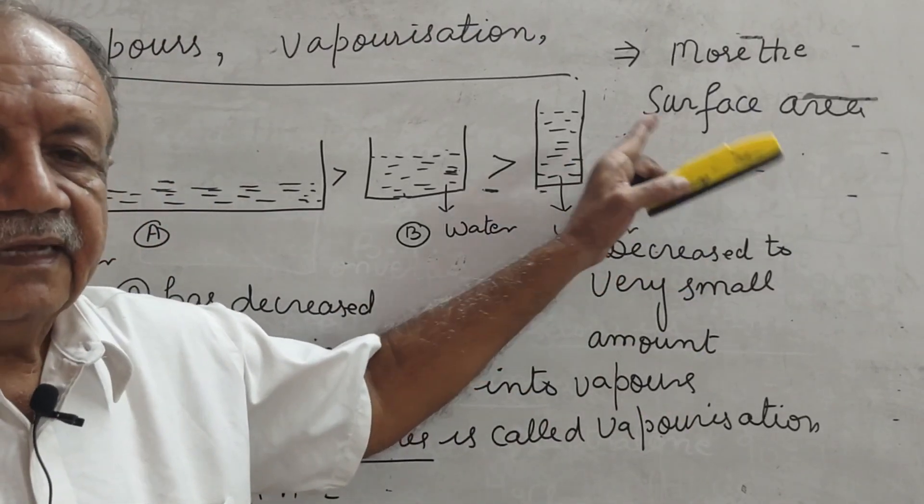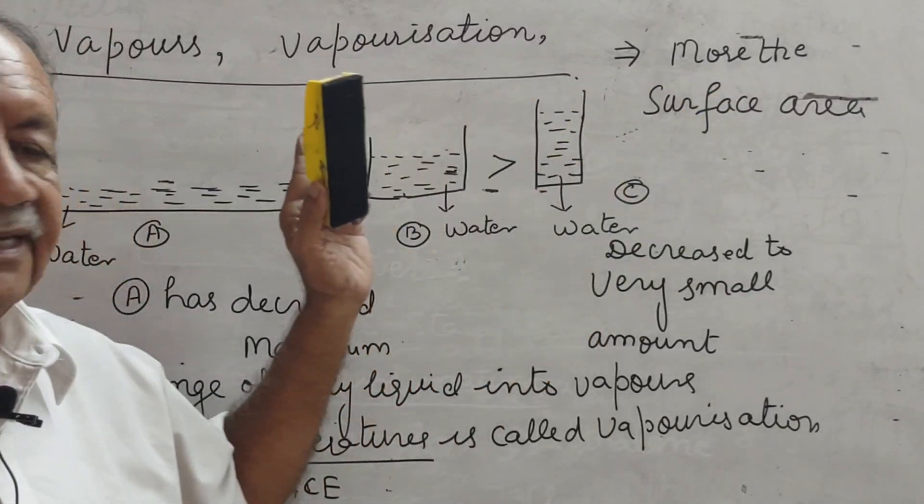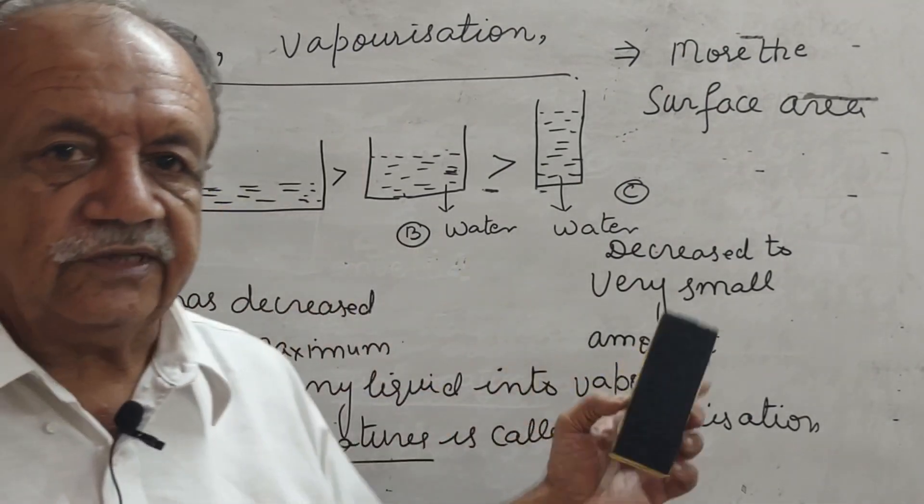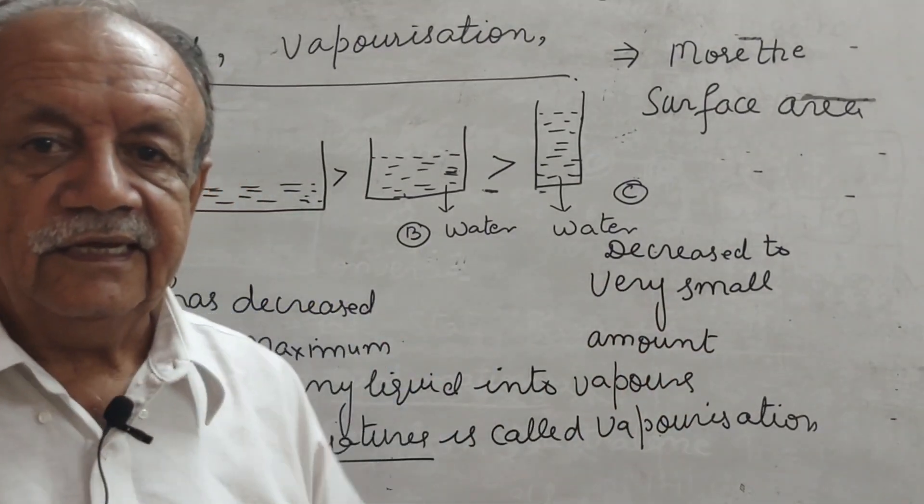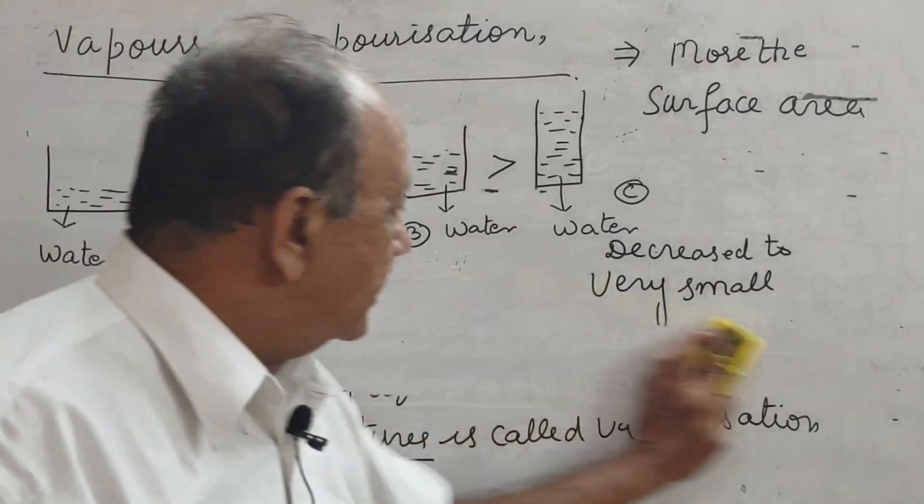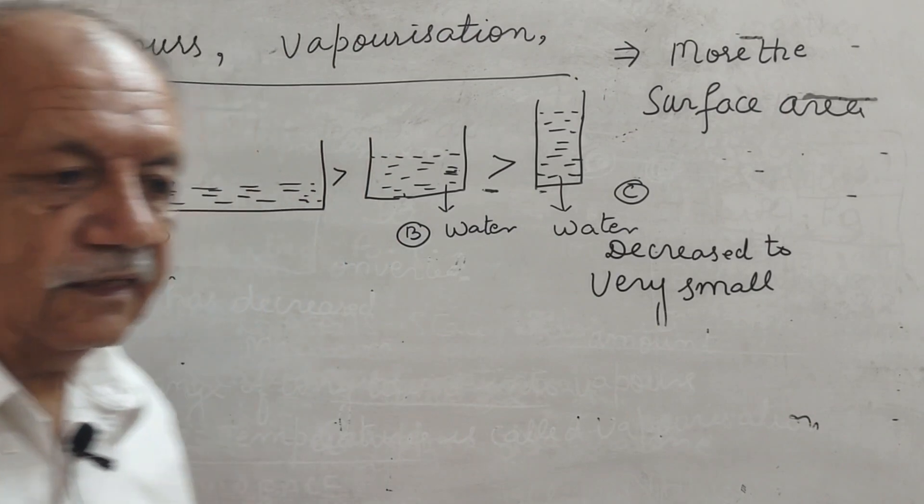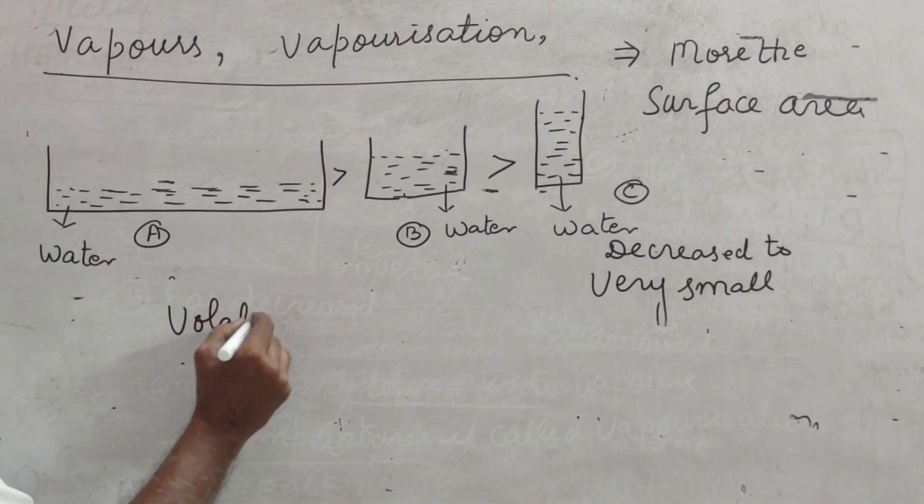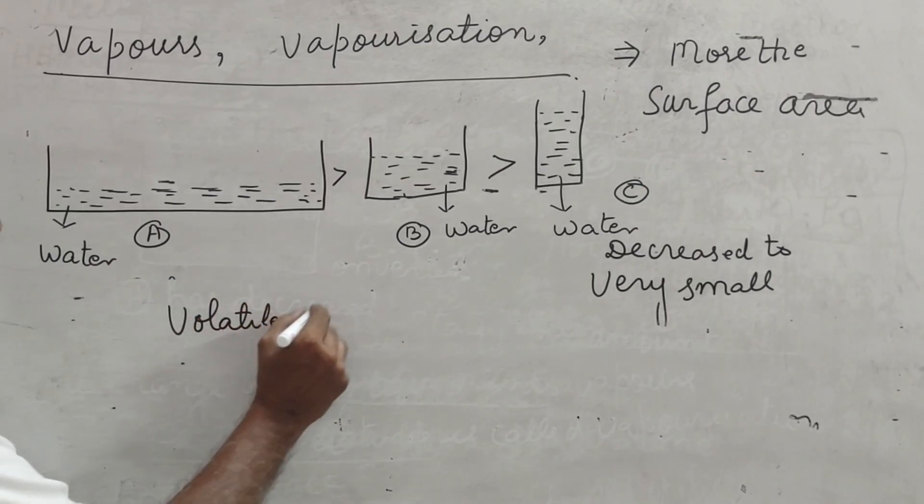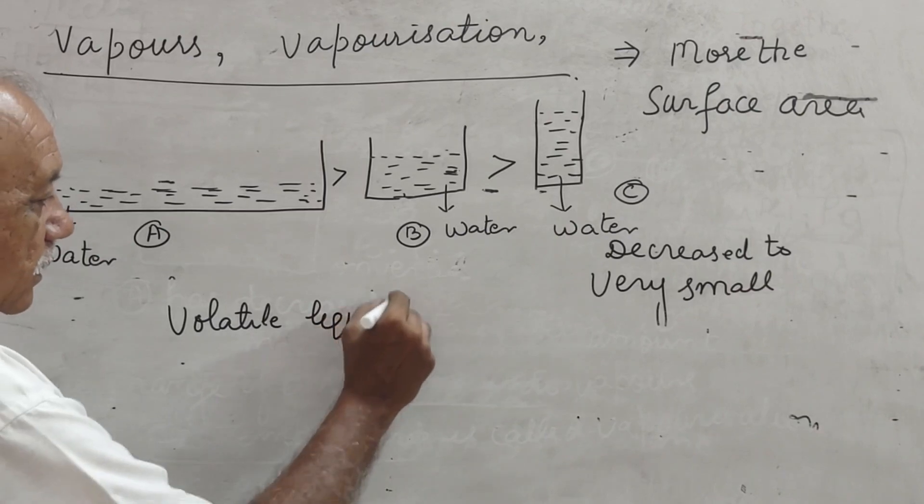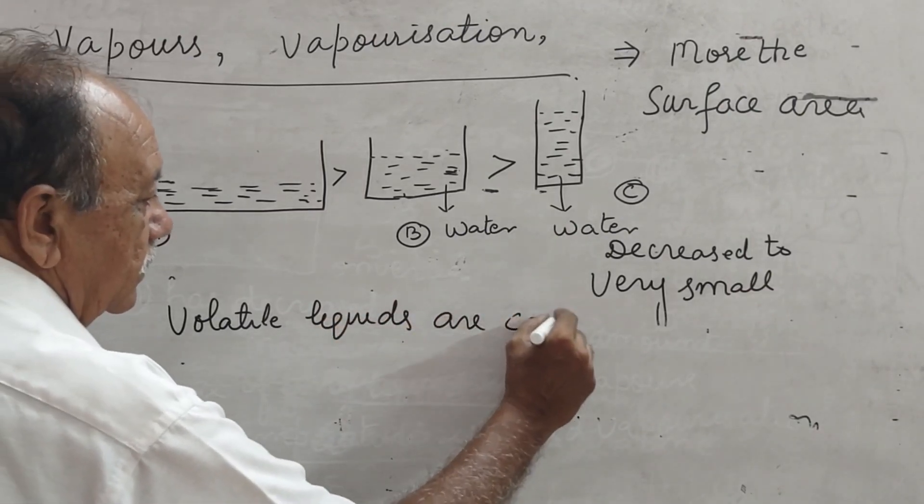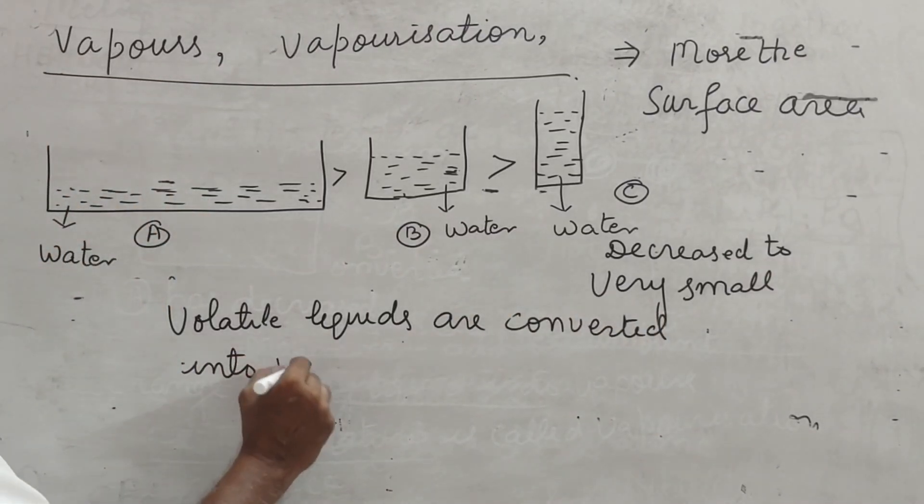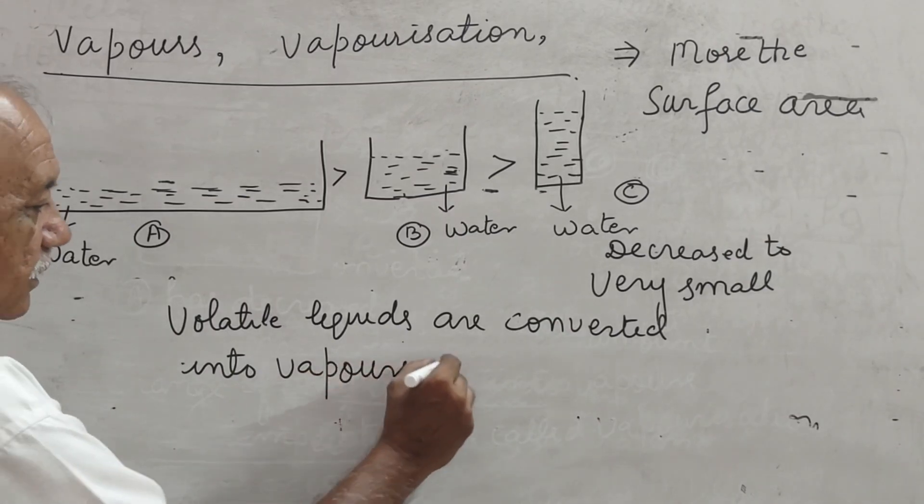And such liquids which are converted into vapors easily, what are they called? Volatile liquids. Volatile liquids are converted into vapors easily.